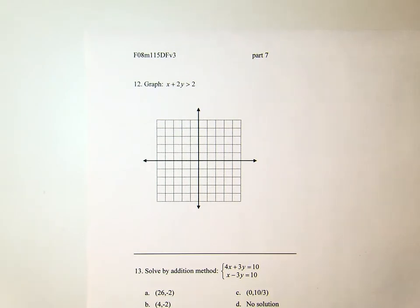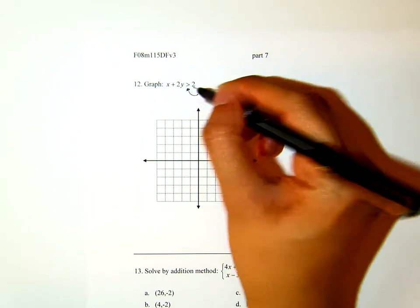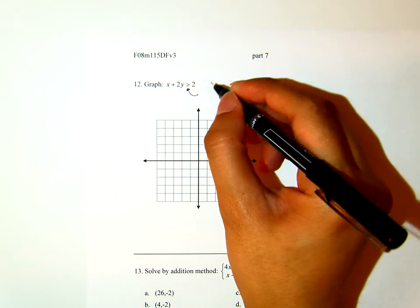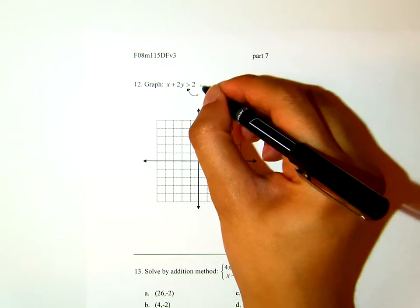Two things. First, we will see that the inequality has no equal sign, which means later on the boundary of the region will be dashes.